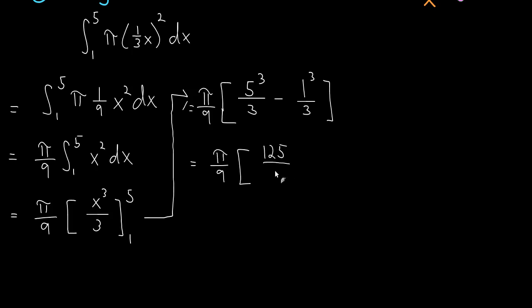And so this is π/9 times 125/3 minus 1/3, and the whole thing simplifies to 124π/27.